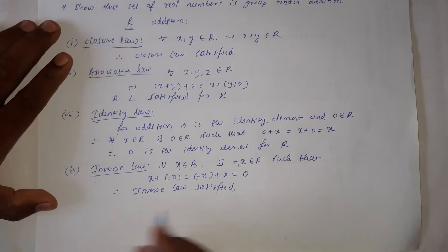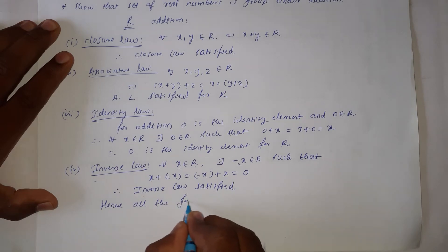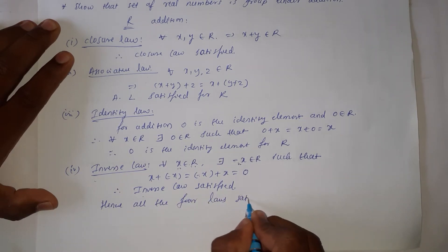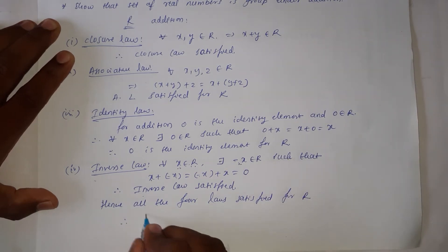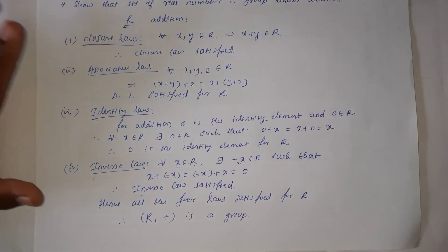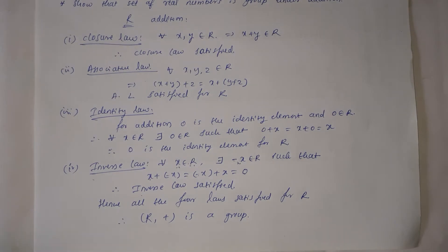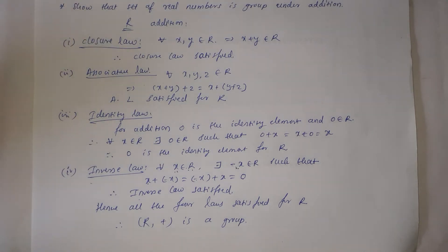Inverse law is satisfied. Hence all four laws — closure, associative, identity, and inverse — are satisfied for R. Therefore, (R, +) is a group.